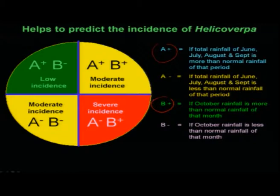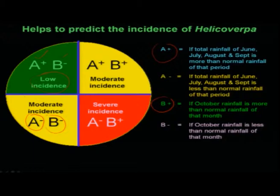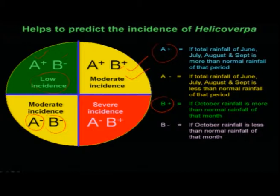A refers to the average rainfall of a particular location for the last 30 years from June to September, and B refers to the average rainfall that occurs during October month only. Considering these two factors, the incidence in November — which is the peak period of incidence — is predicted. If average rainfall from June to September is low and October rainfall is also low, there will be moderate incidence. If June–September rainfall is high and October rainfall is low, we get very low incidence.